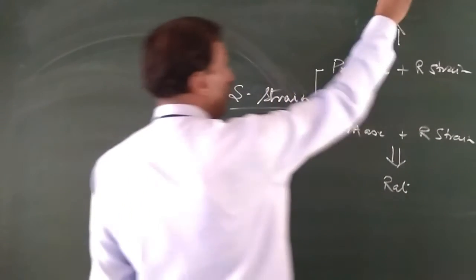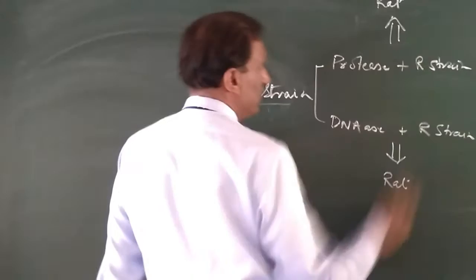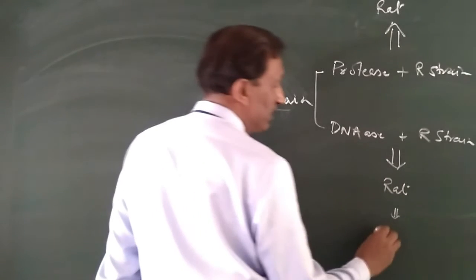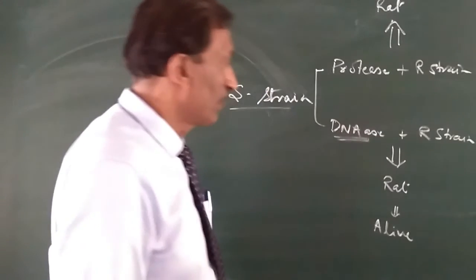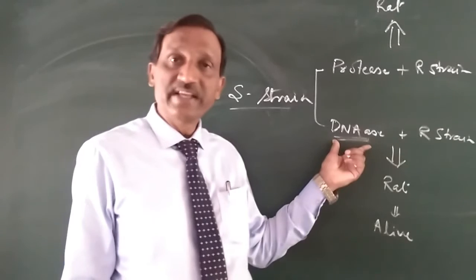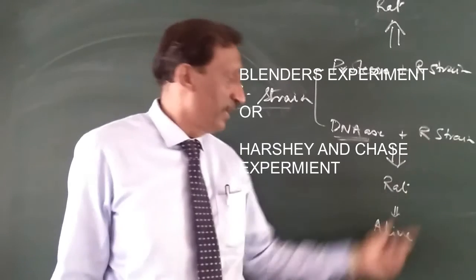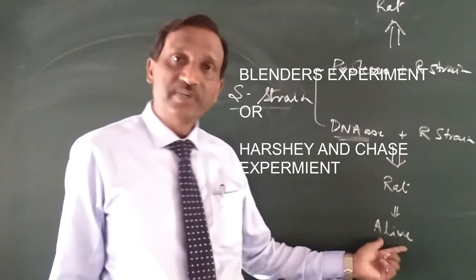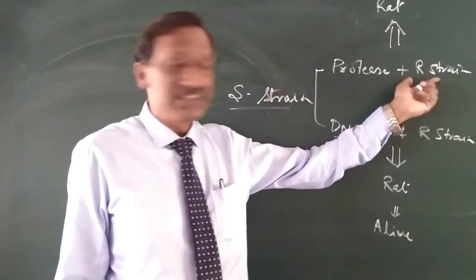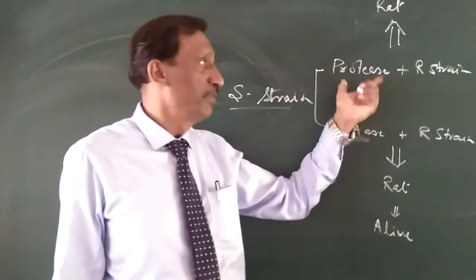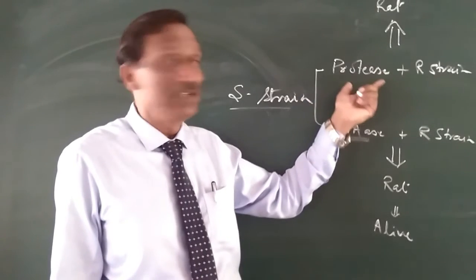He found that when only protease was used, the rat dies. But in the case of DNase, the rats remain alive. That means the DNase enzyme actually digested the DNA. As a result, DNA was no longer there and the R-strain could not change into the smooth state, so the rats survived. When only protein is digested, nothing happens because proteins are not responsible for carrying hereditary characters.